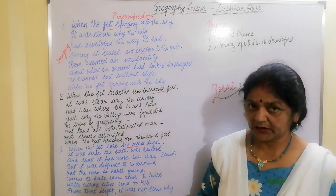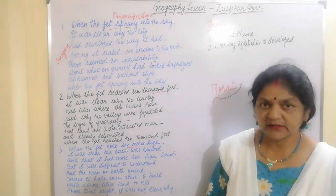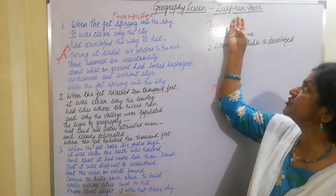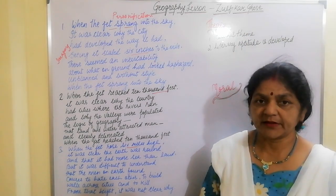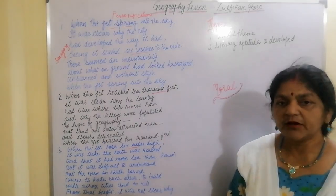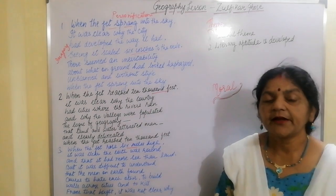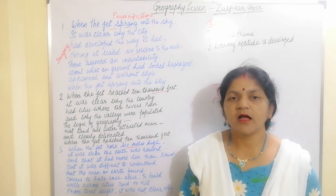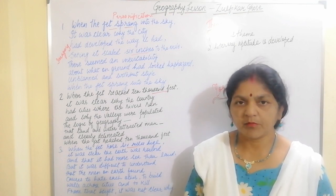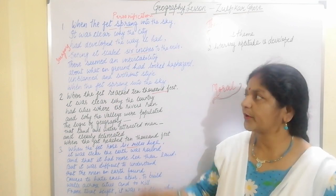Can you imagine what your city would look like if you saw it from 10,000 feet above the ground? This is what we are going to learn in this poem. Now I will tell you something about the poet Zulfika Ghosh. He was born on 13th of March 1935 in Sialkot, which is now presently in Pakistan. He has written novels, poetry and criticism around the topic of cultural alienation. The poet's first novel was The Contradiction, in which he explores the cultural differences of the Western and Eastern culture.